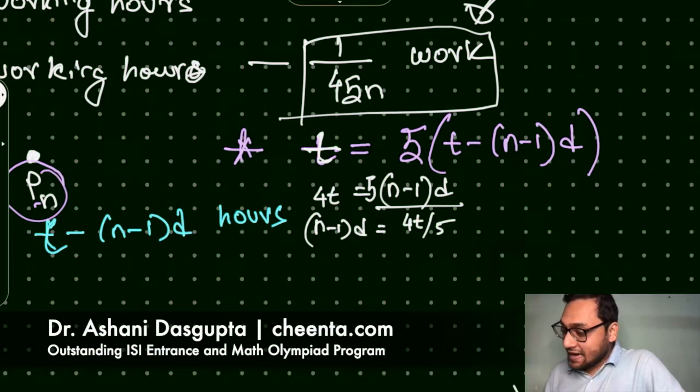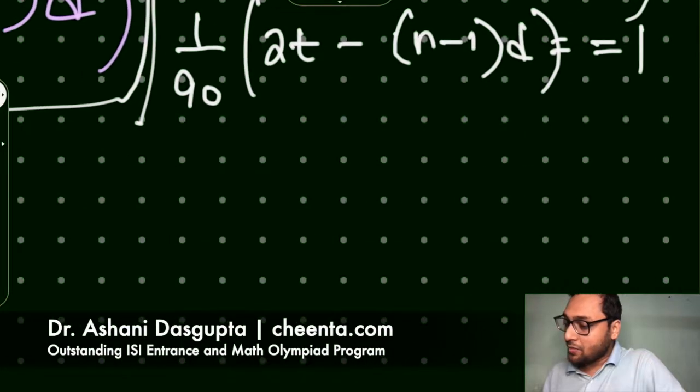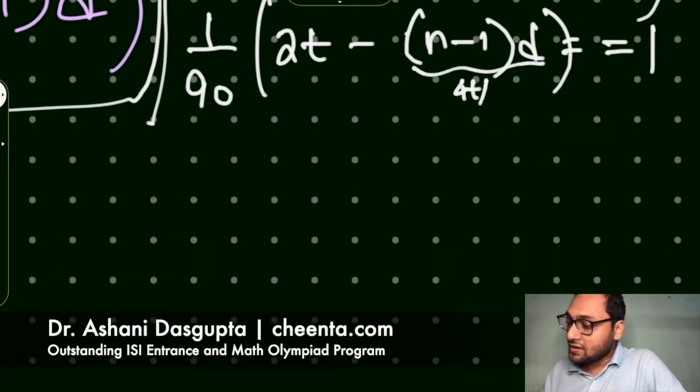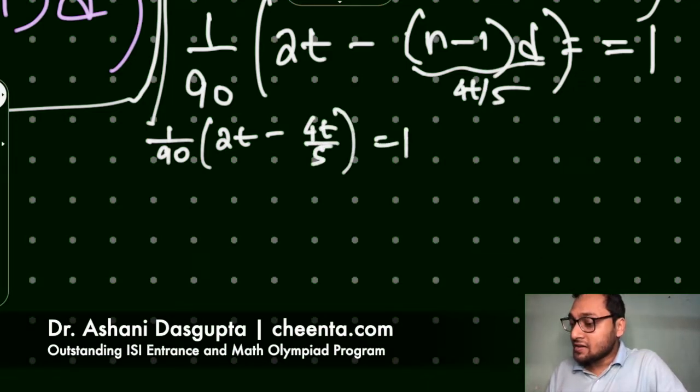Okay, so that is great. Now we can come back and apply it here. We can apply it here, change this into 4t by 5. So this becomes 1 over 90 times (2t minus 4t by 5) is equal to 1. And you know t is the amount of work that the first person has done which is basically our invariant quantity. It does not depend on the number of people working, it does not depend on what interval the next person is coming to work, which is great.